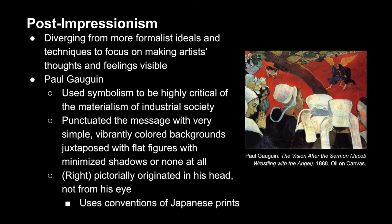Post-Impressionists diverged from the more formalist ideals and techniques to focus more on making the artist's thoughts and feelings visible. Paul Gauguin was one artist doing just this. As a result of the industrial society surrounding him, he was very critical of materialism, utilizing symbols to actively critique it. He often punctuated his messages with very simple yet vibrantly colored backgrounds, juxtaposed with flat figures in the foreground. Often his figures had minimal shadows or none at all — techniques he picked up from observing Japanese prints. In the example we see here, the image obviously came from the artist's mind and conception of the story rather than observation.